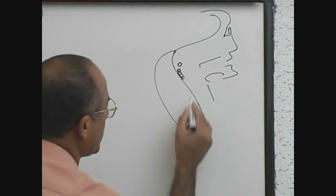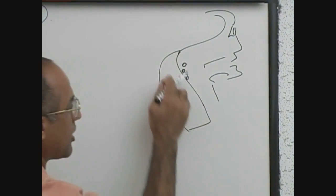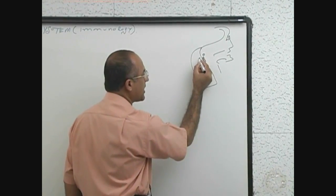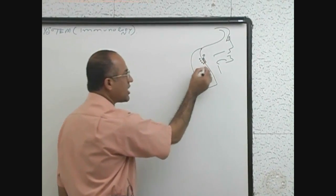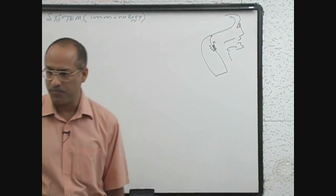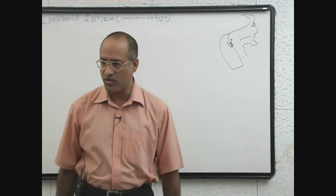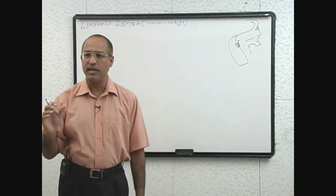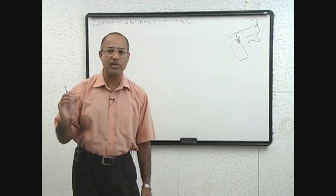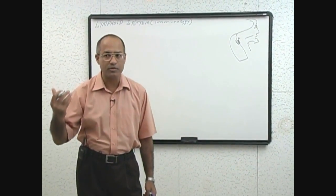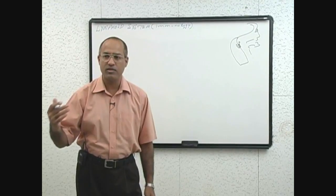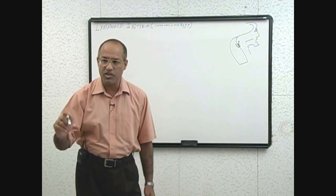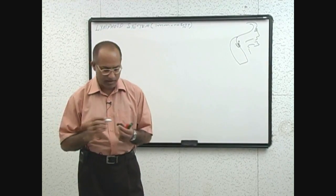Let's suppose I have enlarged this tissue. This is the wall of the pharynx. This bacteria enters into the wall of the pharynx and starts damaging the local tissue. When it starts damaging the local tissue, naturally the body will try to defend itself against this invading, damaging microbe.